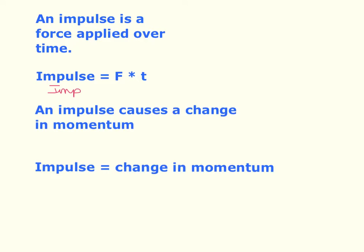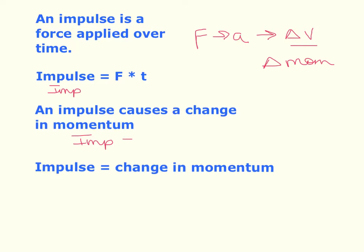In impulse, since you're applying a force over a time, when you apply a force you get acceleration. And when you have acceleration, you have a change in velocity. So a force is going to give us acceleration, and acceleration is going to give us a change in velocity. And when we change our velocity, that's going to change our momentum. The technical abbreviation for momentum is P, which makes no sense — so I write 'mom' for momentum. An impulse causes, or is equal to, the change in momentum.